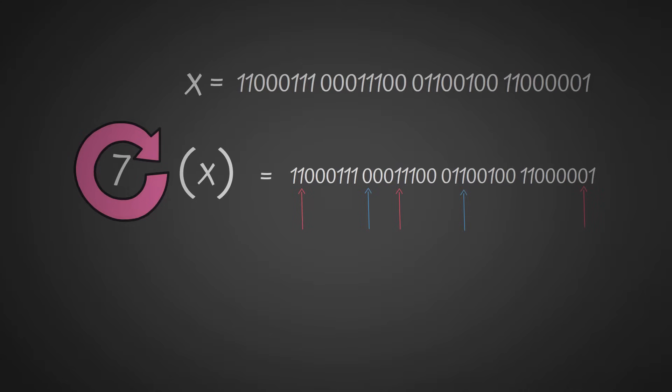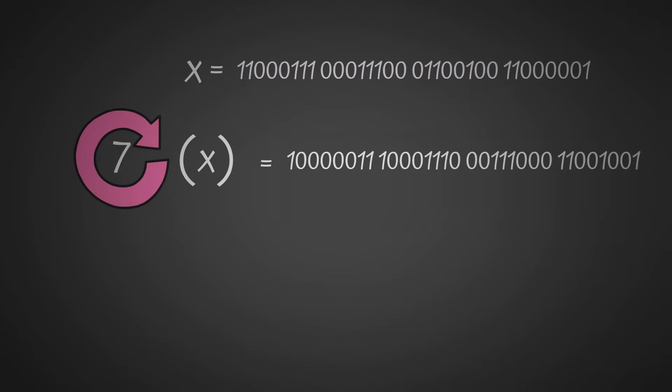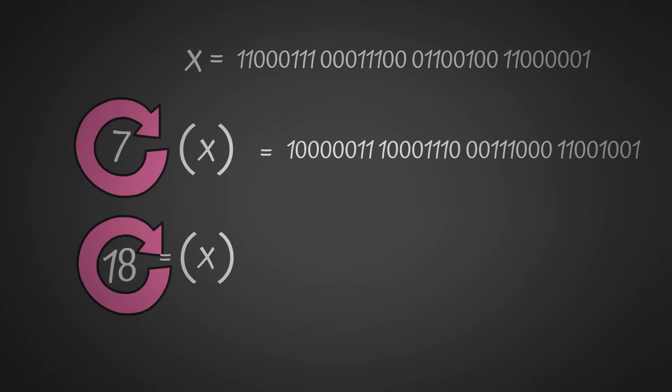But these last 7 bits, they have nowhere to go, so we loop them back around. After we do that, we get this number. Now we do the same, we get a right rotation of 18 of X, and we get this number.